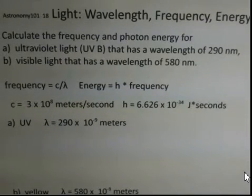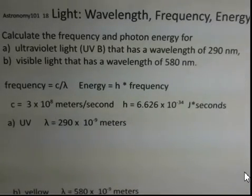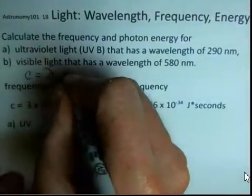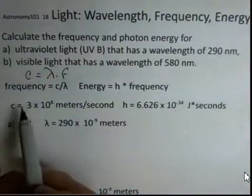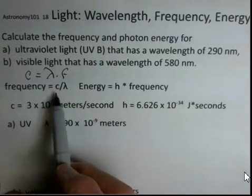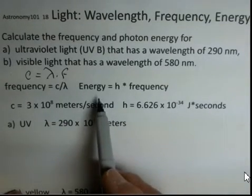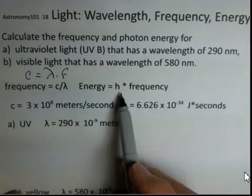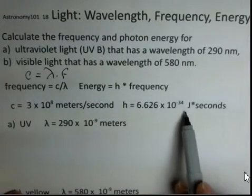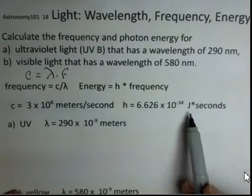To do these calculations, we'll make use of the relationship that the speed of light is equal to wavelength times frequency. I've solved this for frequency, dividing both sides by wavelength. So speed of light, which is a given constant, divided by wavelength. And then energy is equal to Planck's constant times the frequency of the light. So here's Planck's constant, 6.626 times 10 to the minus 34 joules times seconds for its units.